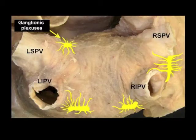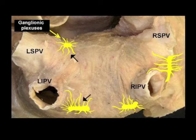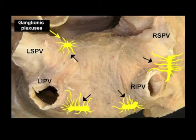There are four main autonomous ganglionic plexuses: firstly, the left superior; secondly, the left inferior; thirdly, the right anterior; and lastly, the right inferior. The radiofrequency applications are performed within these regions in order to damage the plexuses.